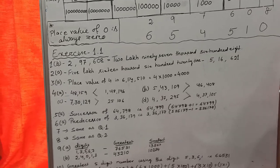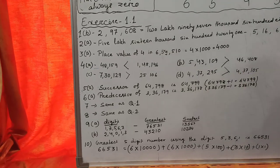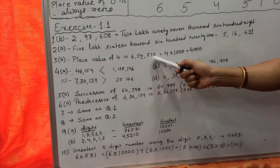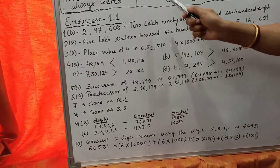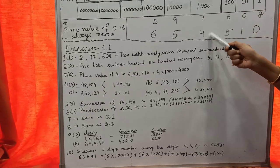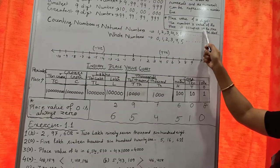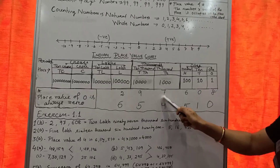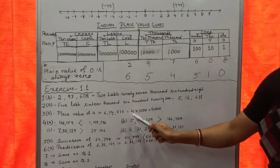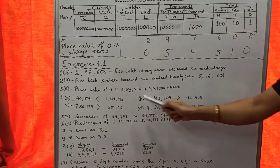For Question No. 3, write the place value of the given number. Here I have done one question for you: the place value of 4 in 6,54,510. Where is 4 here? 4 is in the 1,000 place. So what is the place value? The digit multiplied by the value of the place it occupies. The value of this place is 1,000. So the place value of 4 is 4 × 1,000 = 4,000 in this number.